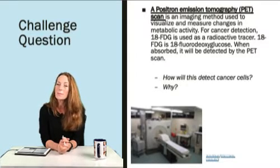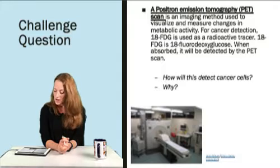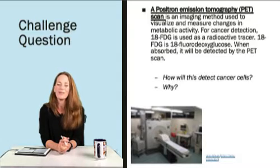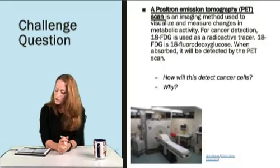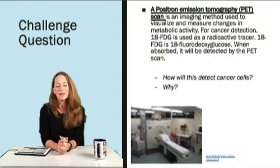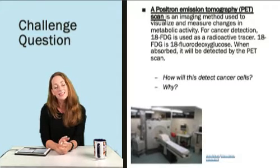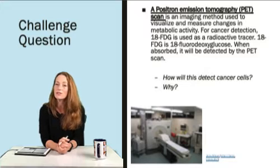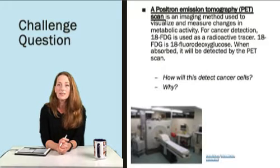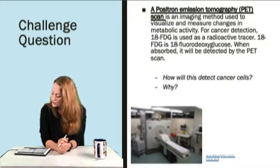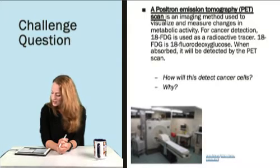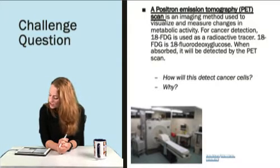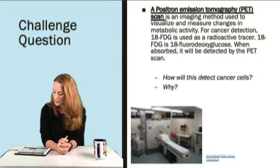Have you ever heard of a PET scan? A PET scan is positron emission tomography. It's an imaging method that's used to visualize and measure changes in metabolic activity, and it can be used to detect tumors. For cancer detection, they use something called 18-FDG as a radioactive tracer.